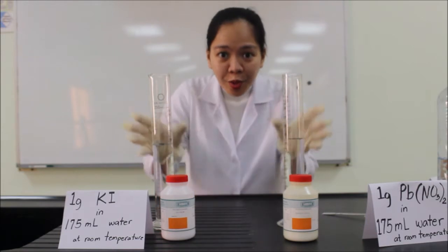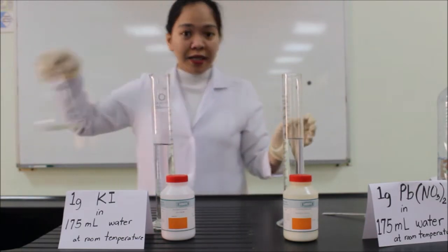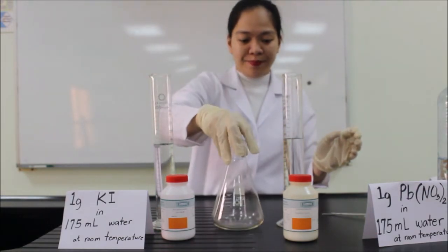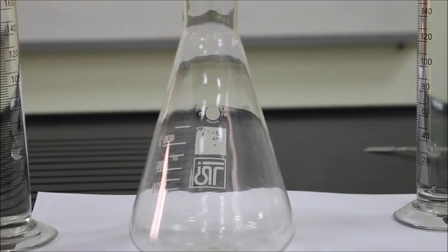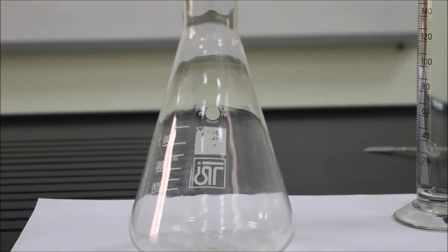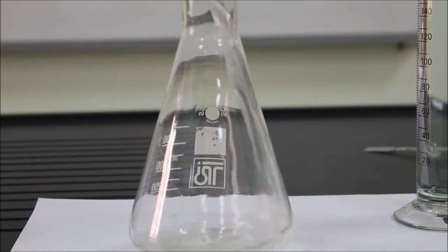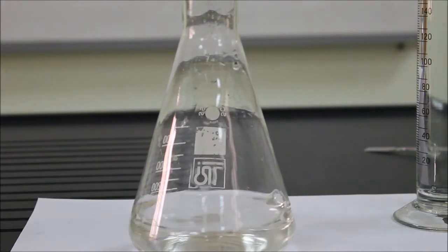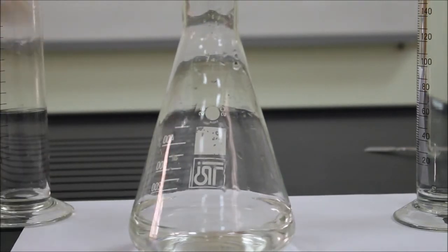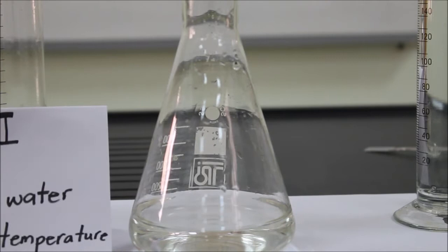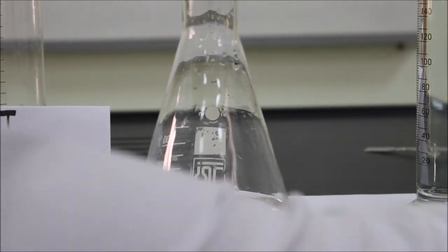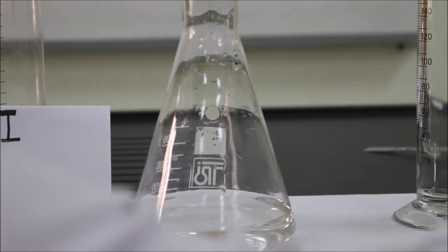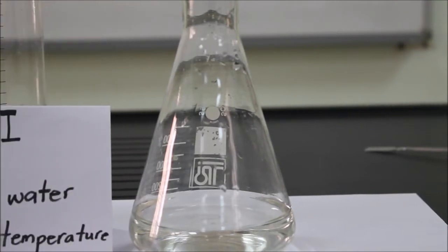Then we will combine this in a flask. So I'll start with the potassium iodide. I'll pour it all in the flask. And I will combine it with the lead nitrate. Watch what will happen.